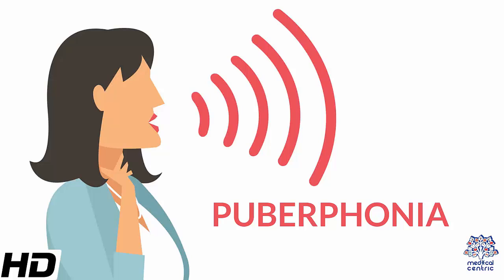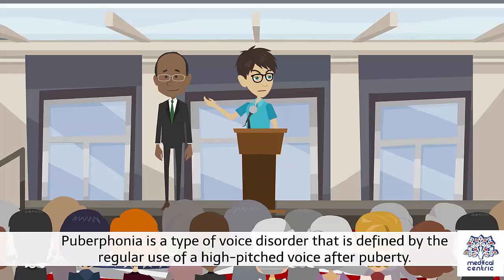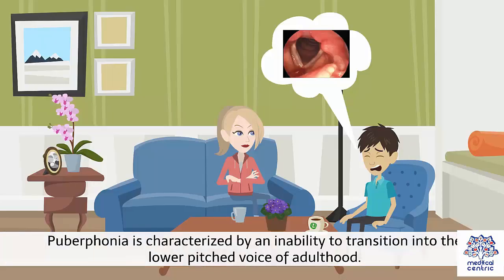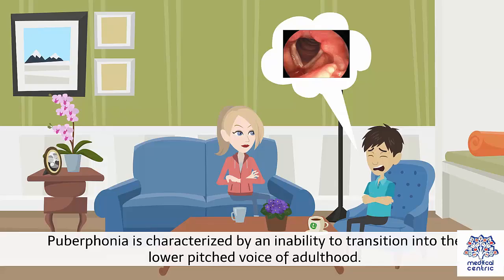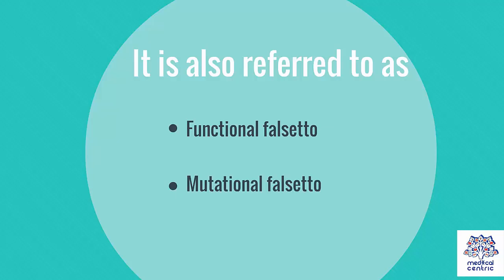Today's topic is Puberphonia. Puberphonia is a type of voice disorder that is defined by the regular use of a high-pitched voice after puberty. It is characterized by an inability to transition into the lower-pitched voice of adulthood. It is also referred to as functional falsetto or mutational falsetto.